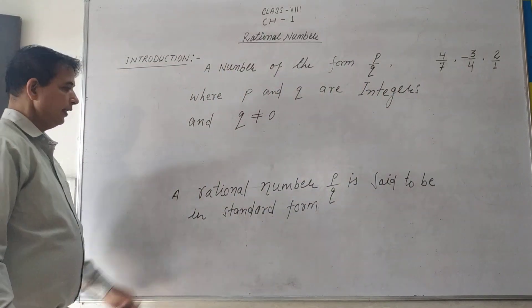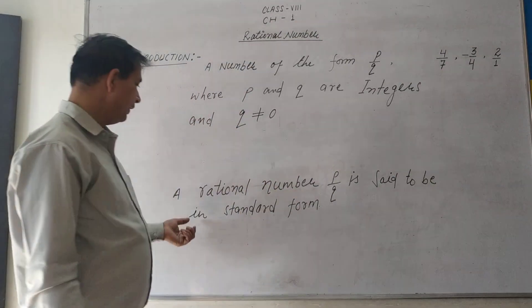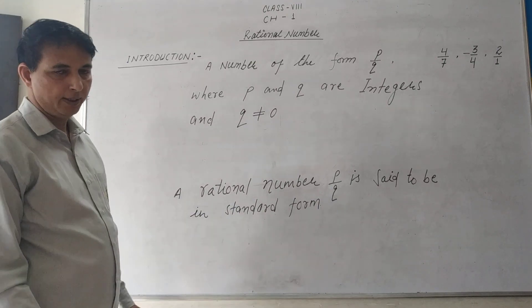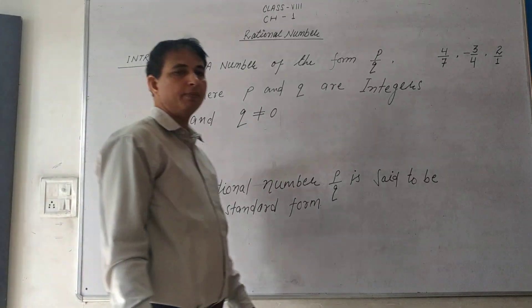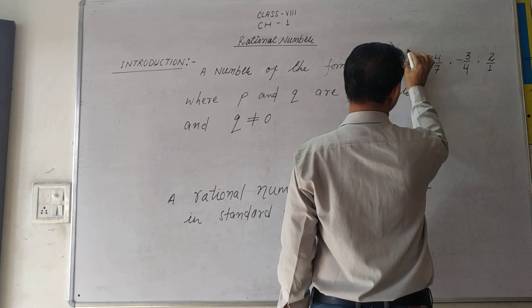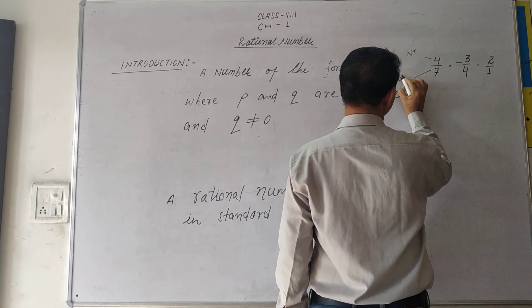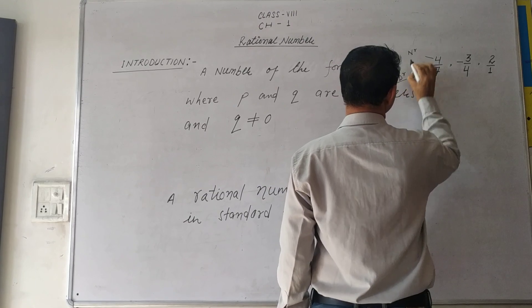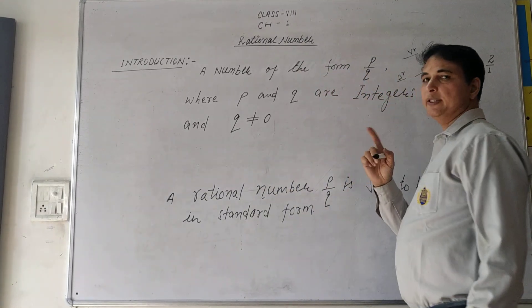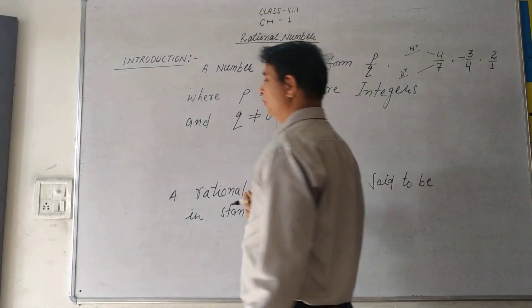A rational number p upon q is said to be in standard form. Standard form means that the numerator part and the denominator part should have a common factor of only 1. Their common factor should not be more than 1.